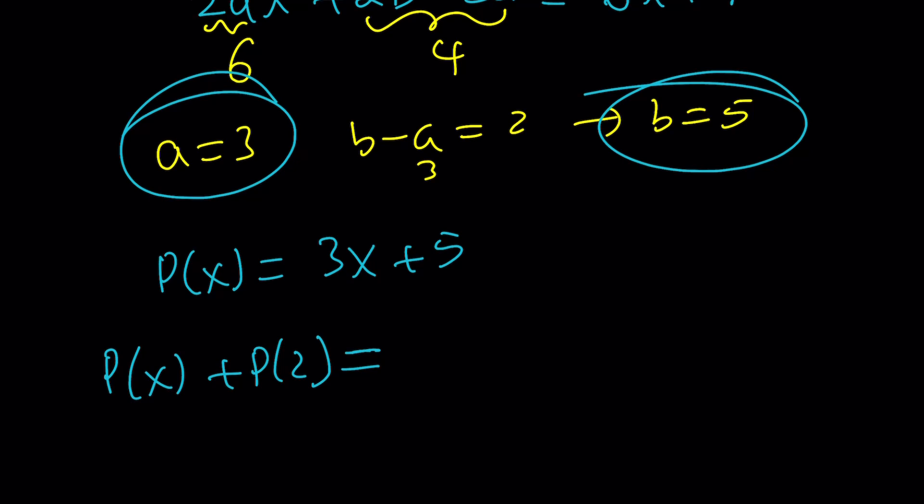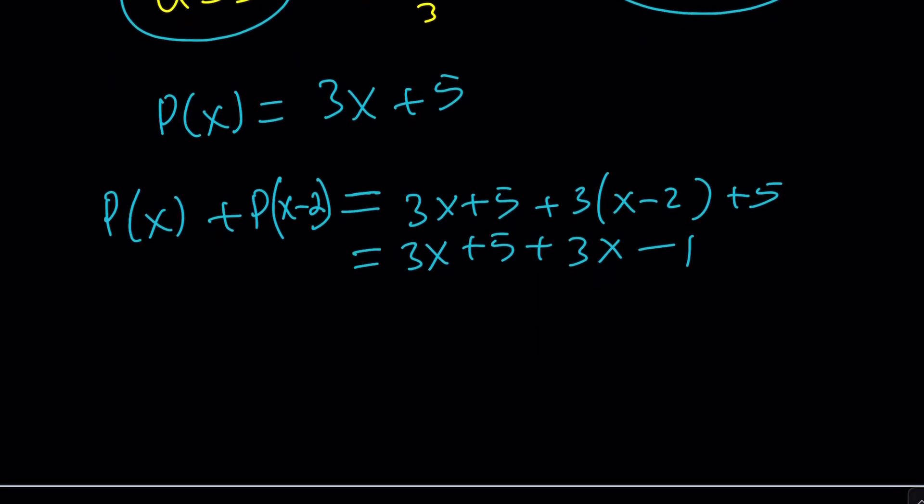P(x), uh-oh, I don't know how that turned into P(2). That's supposed to be P(x-2). And now this will become 3x + 5 + 3(x-2) + 5, which is 3x + 5 + 3x - 6 + 5, which is 3x - 1. And this becomes,